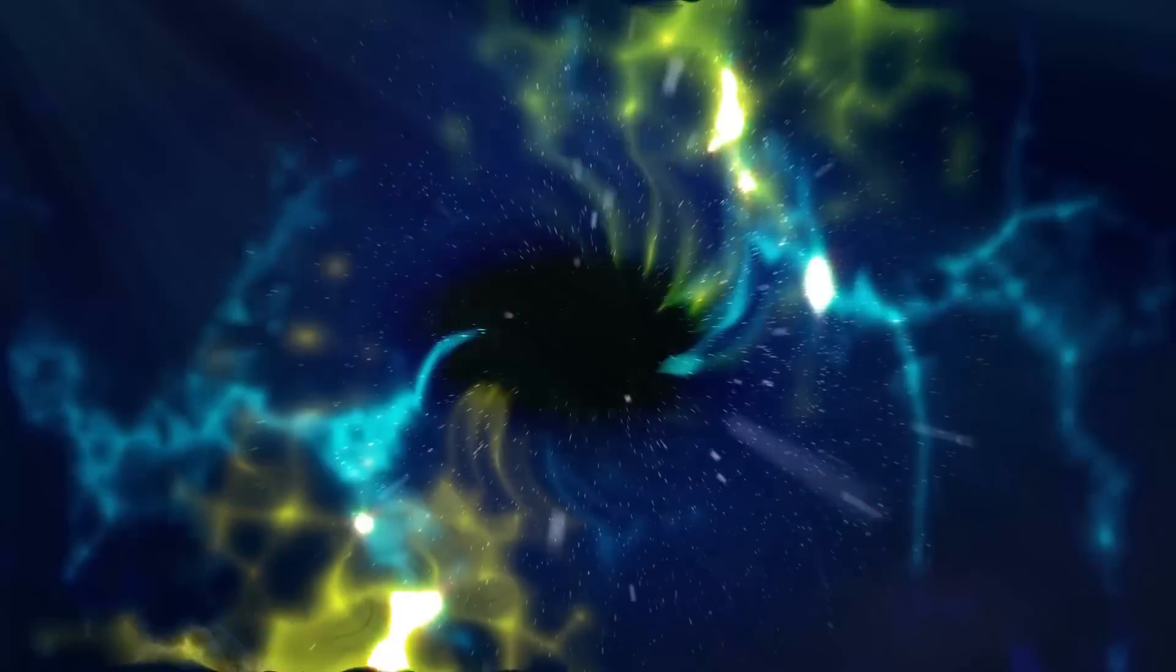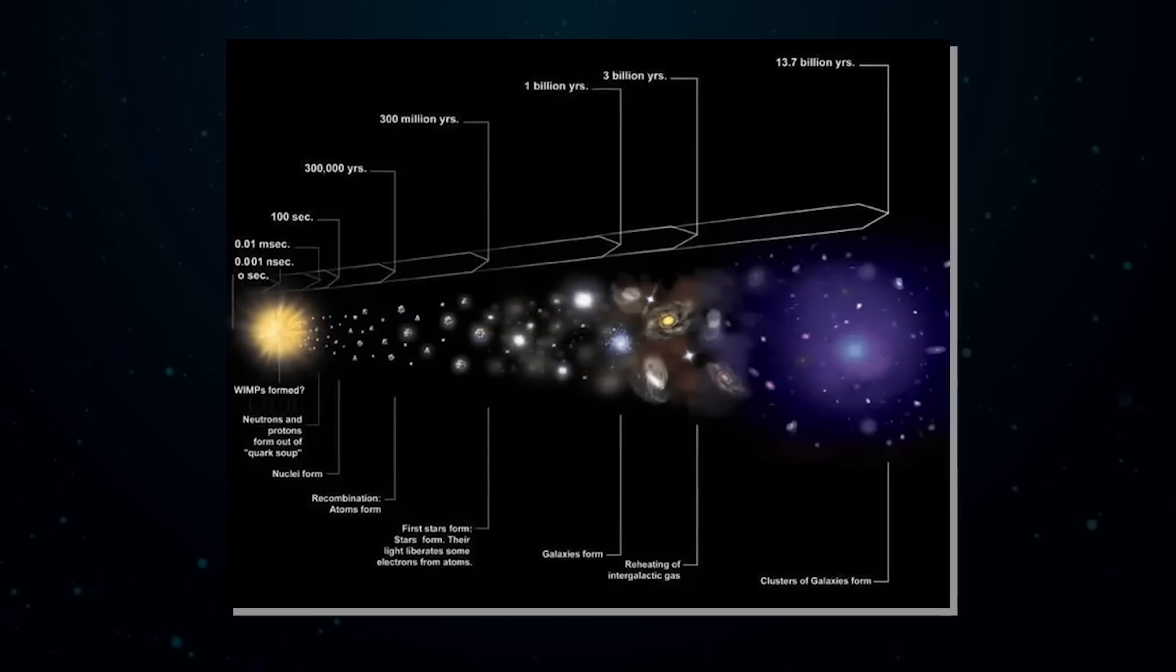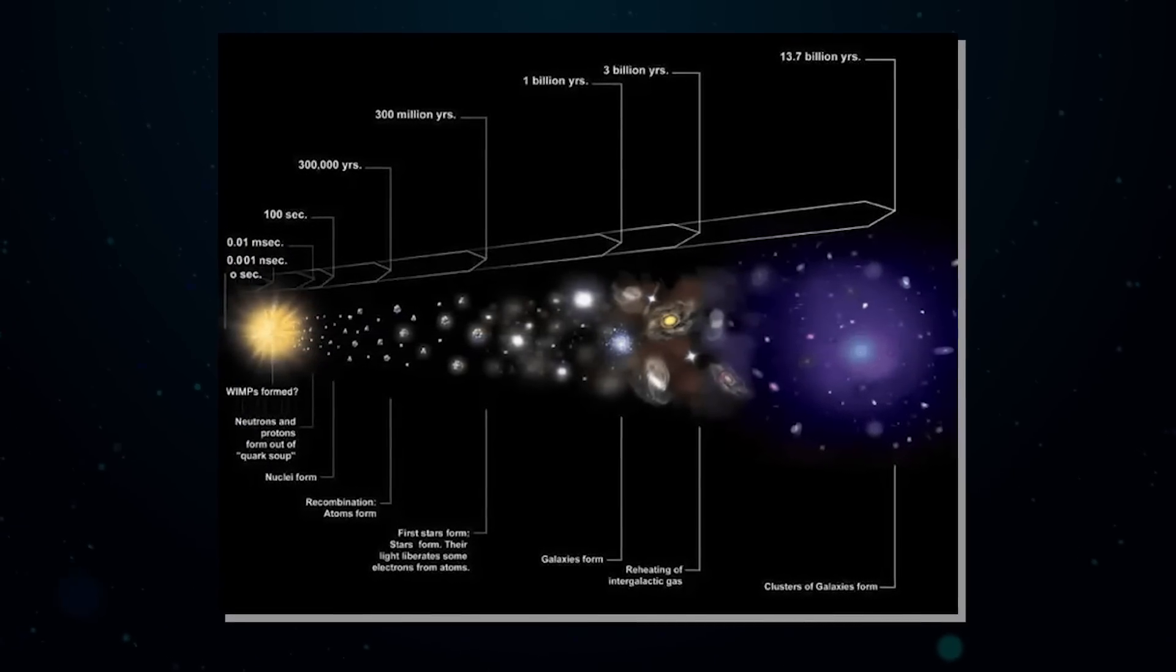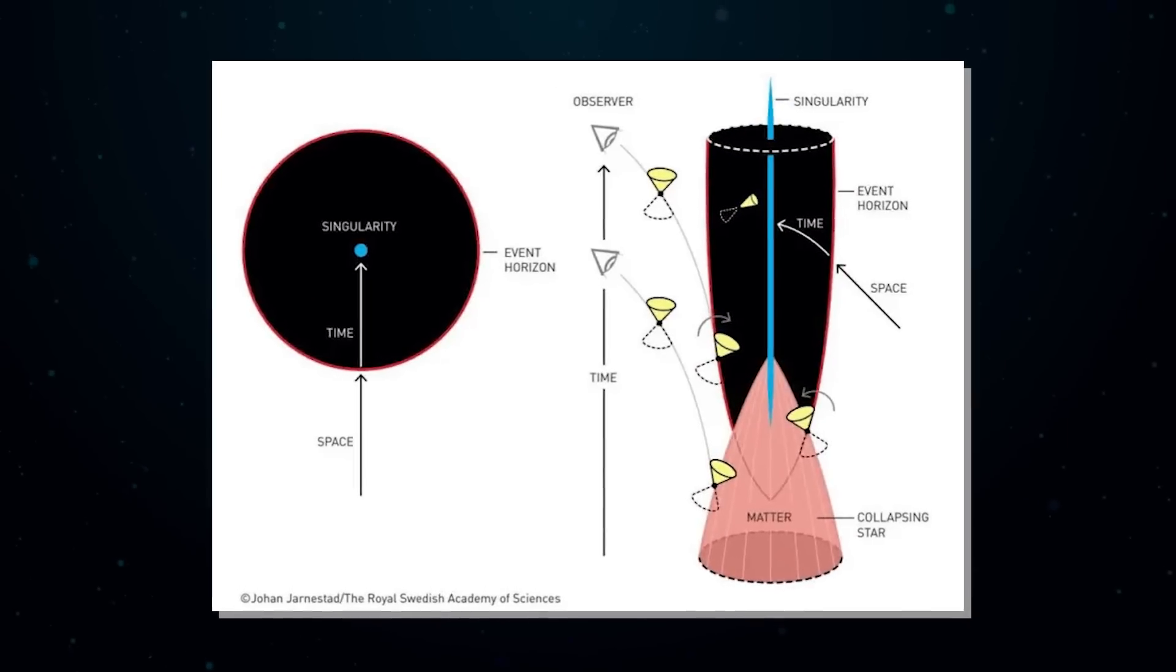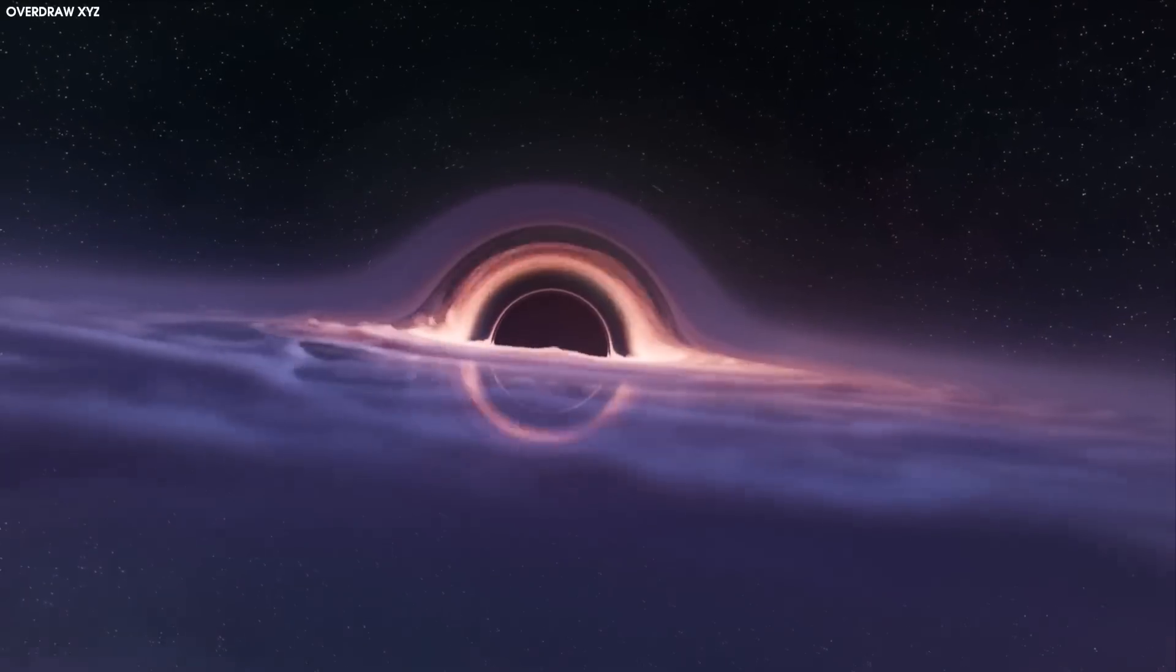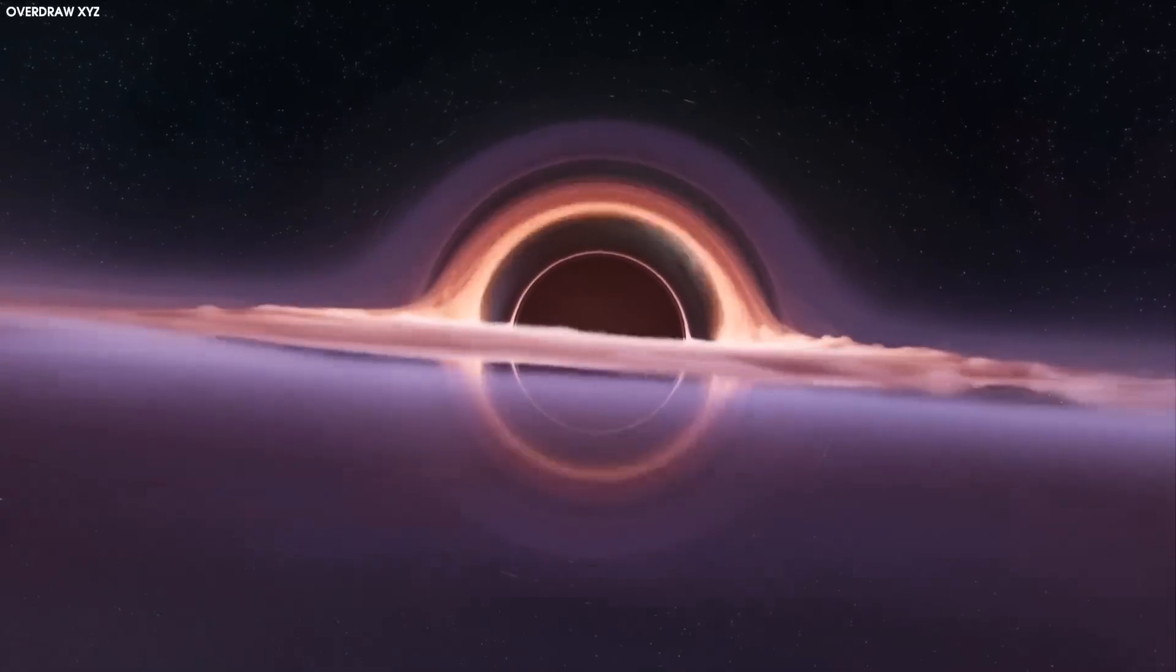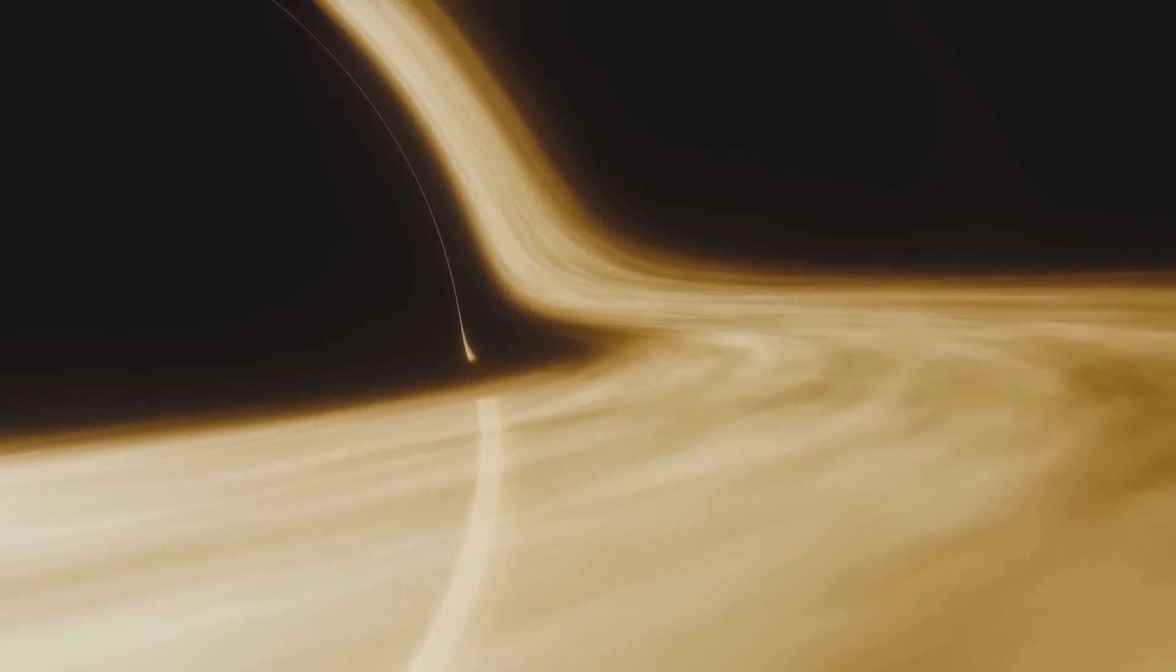The farther back we extrapolate, the smaller, more uniform, and more compact things were. Going all the way back, this picture of the hot Big Bang appears to approach a singularity, the same condition found at the central interiors of black holes, a location where densities, temperatures, and energies are so extreme that the laws of physics themselves break down.